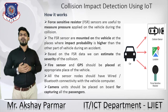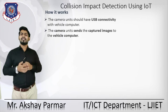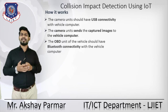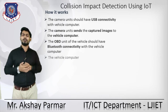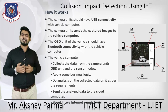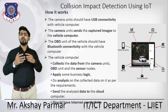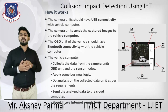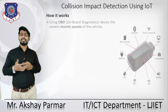The camera unit should be placed onboard for capturing all the passengers. The camera unit should have USB connectivity with the vehicle computer and sends captured images to it. The OBD unit should have Bluetooth connectivity with the vehicle computer. The vehicle computer collects data from camera units, OBD units, and sensor nodes, applies business logic, performs analysis, and sends the analyzed data to the cloud for storage and processing.